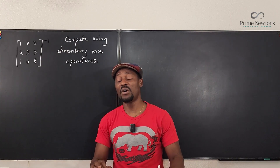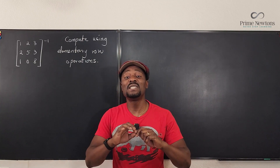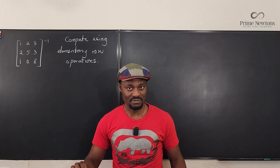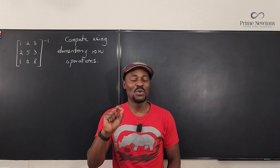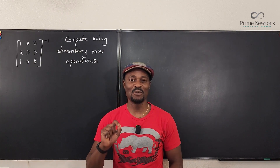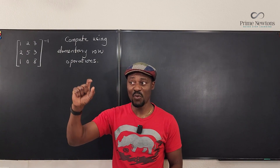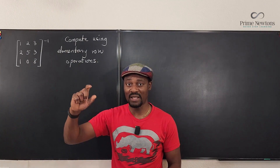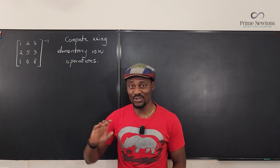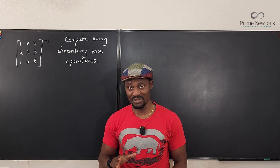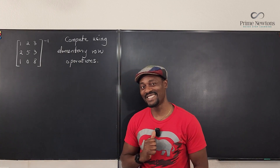Now what is the problem with this method? There is zero problem, except you're more likely to make computational errors while you are subtracting or adding the rows together to get your zeros. So let's get into it.